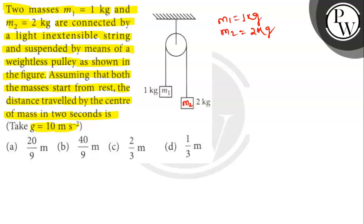The acceleration of the system is A equals M2 minus M1 times g divided by M1 plus M2. That is 2 minus 1 times g divided by 1 plus 2, which gives g by 3, that is 10 by 3.